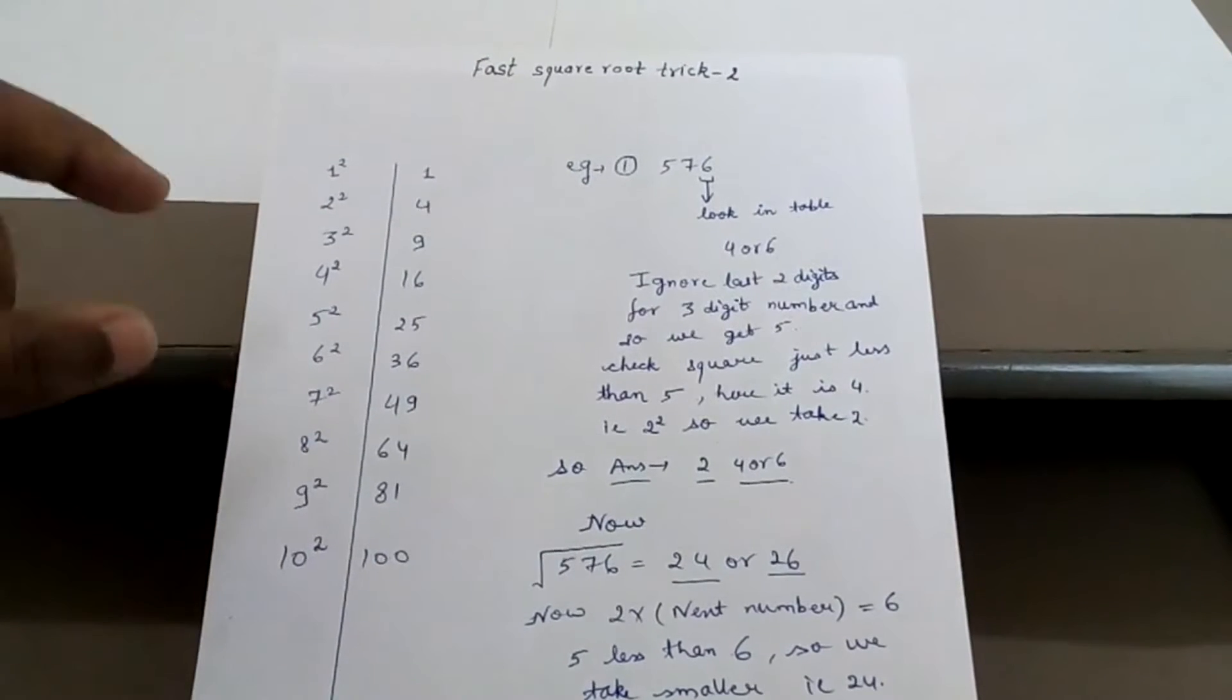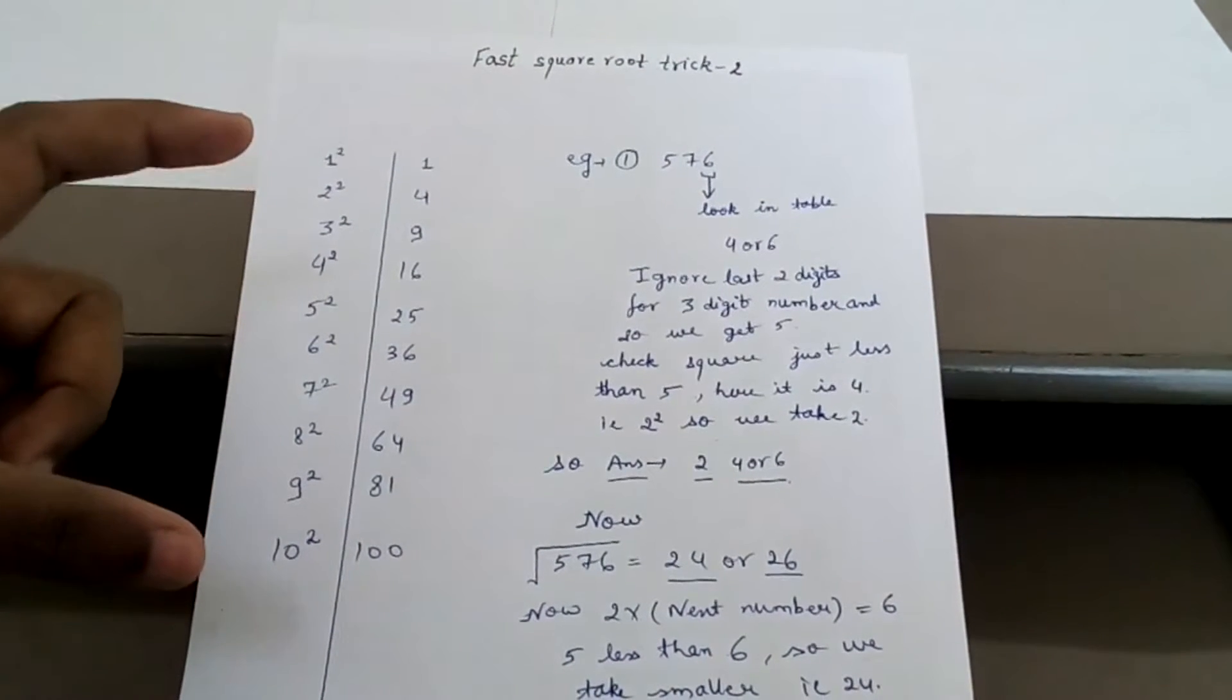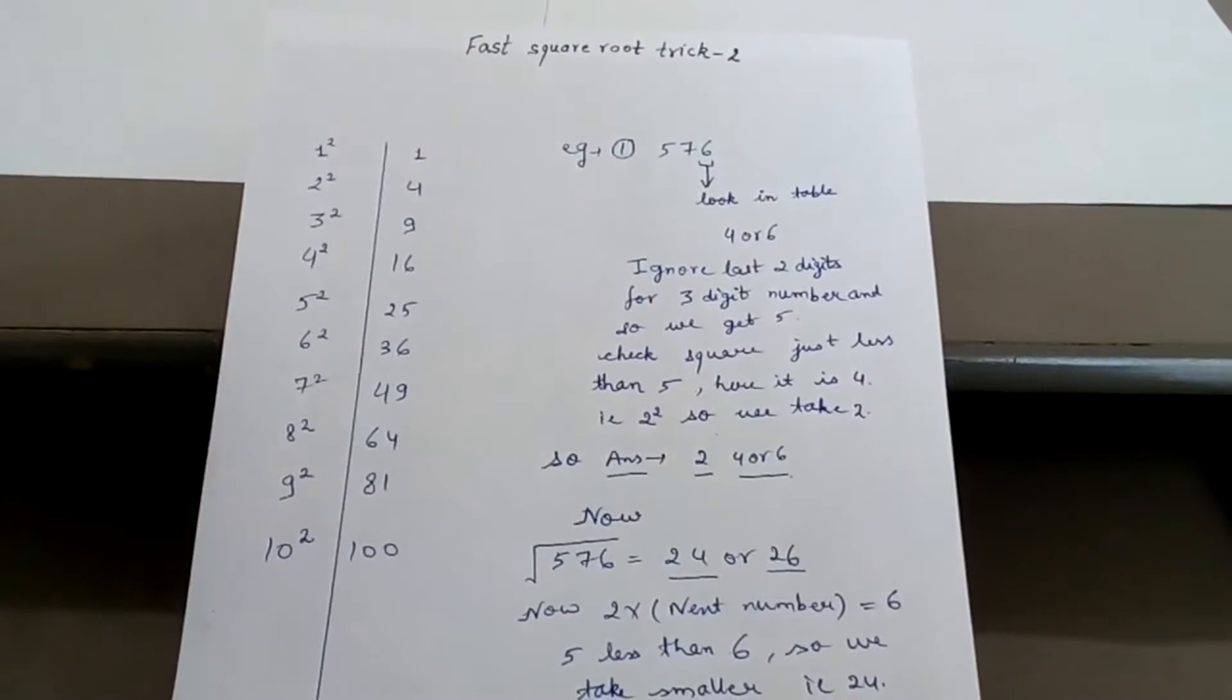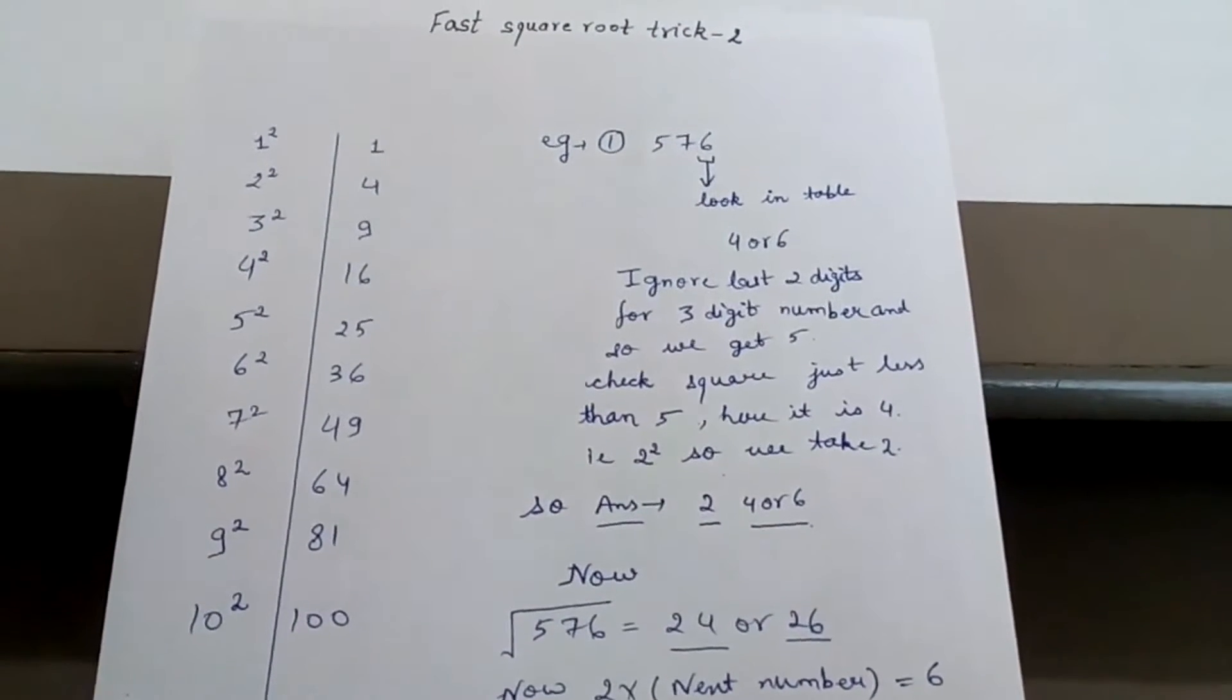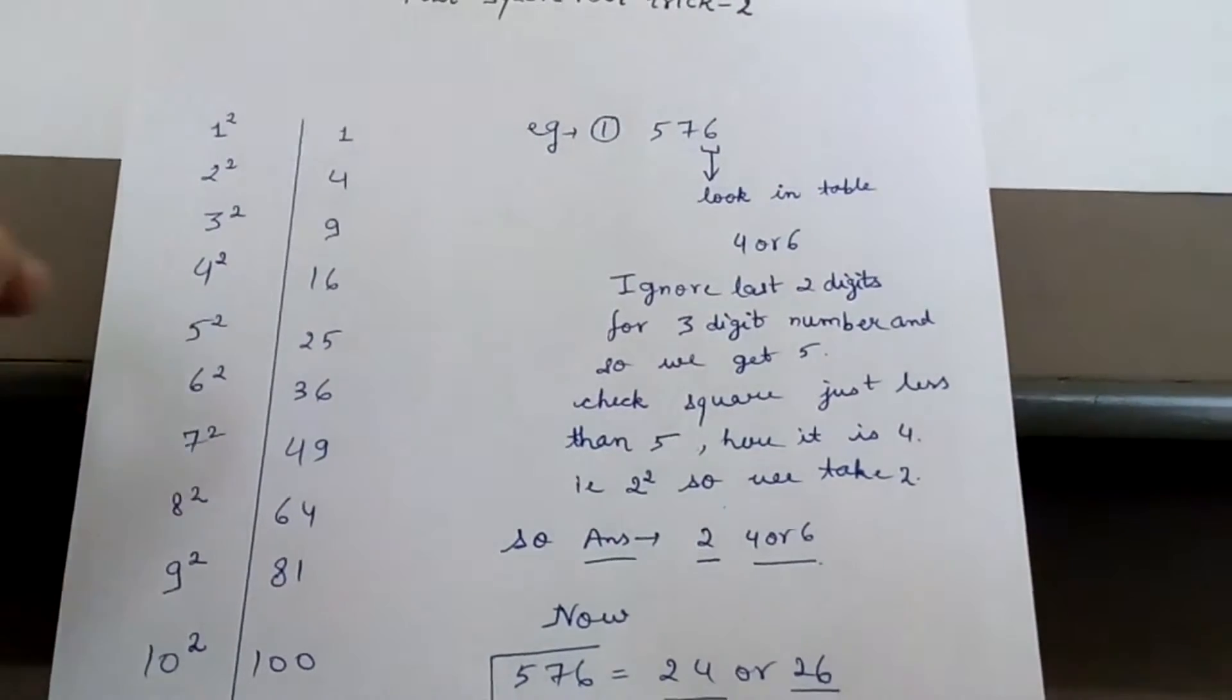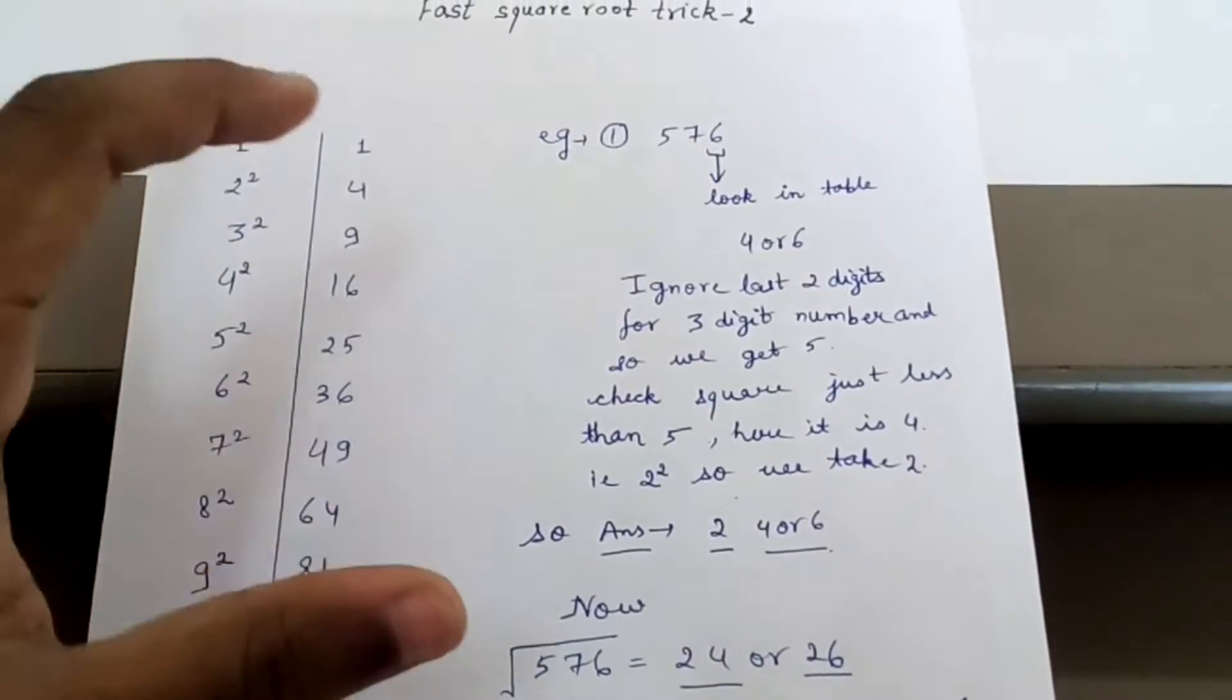Initially you can make this table, but after some practice you can do it mentally. Now suppose you have this example: you have to find the square root of 576.